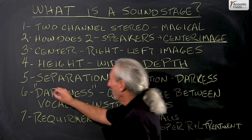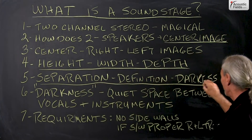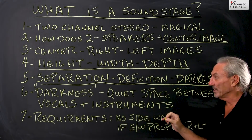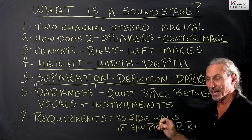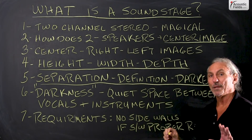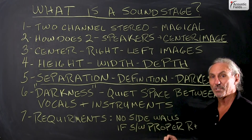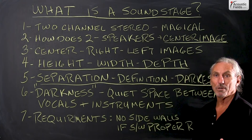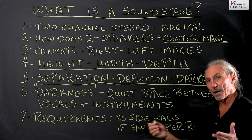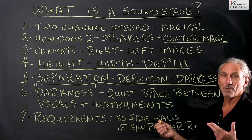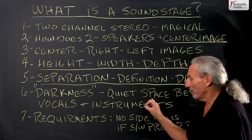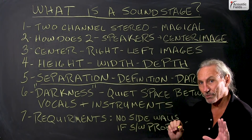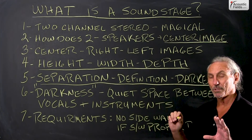Our goal in any kind of treatment is a nice combination of absorption and diffusion to produce separation, definition, and what we call darkness. Darkness is a really great thing and it's kind of the ultimate compliment you can pay to a room if it's designed correctly and has the proper size, volume, and ratio of distance — speakers apart, distance to listening position, distance to treatment on the rear wall. Darkness is that quiet space between voice and instruments when the vocals quit and the instruments quit and the next note is sung or struck.